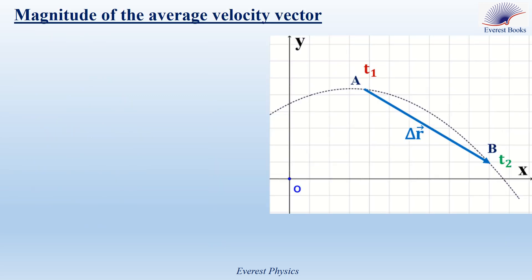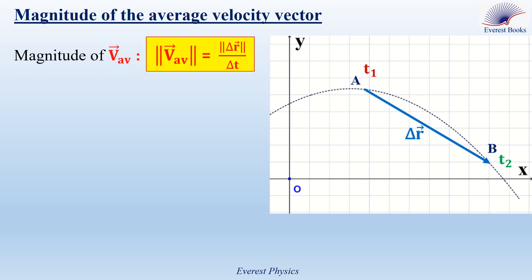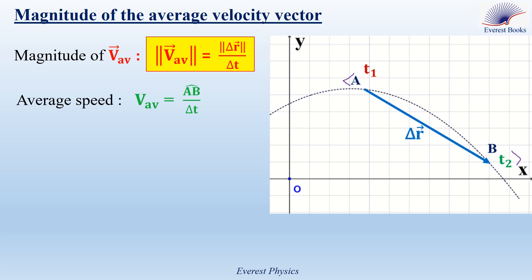Let's move to the magnitude of the average velocity vector. The average velocity vector is equal to the displacement vector divided by the time taken. Therefore, its magnitude is equal to the magnitude of the displacement vector divided by the time taken. Now consider a particle moving on a curved path. The particle reaches point A at instant T1 and reaches point B at instant T2. We draw the displacement vector delta R between T1 and T2. The average speed between A and B is equal to the travel distance between A and B over the time taken.